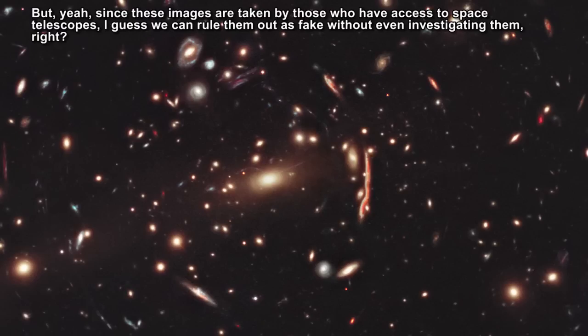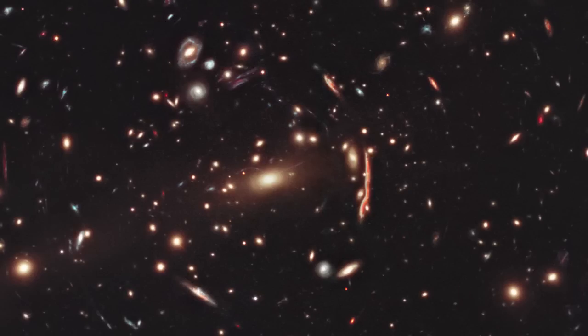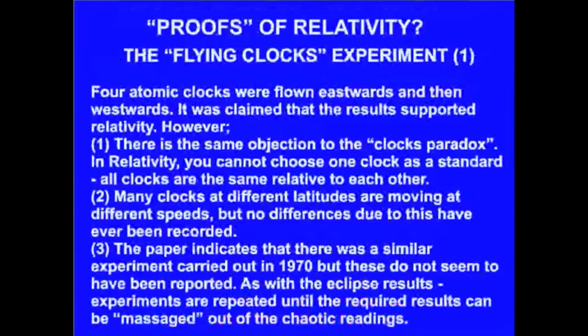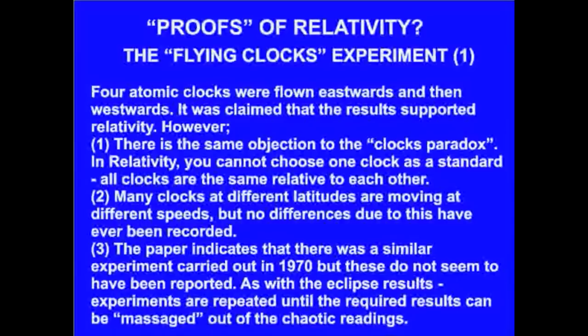Gravitational lensing remains a proven fact, though, because we've made far better observations today with space telescopes aimed at distant galaxies. This eliminates the problems you bring up and shows with far greater precision that Einstein was spot on. The flying clocks experiment. Four atomic clocks were flown eastward and then westward. It was claimed that the results supported relativity. However, there is the same objection to the clocks parallax. Okay, you can stop right there. The fact that you don't understand the theory doesn't constitute evidence against it. I've already explained why this isn't a problem.